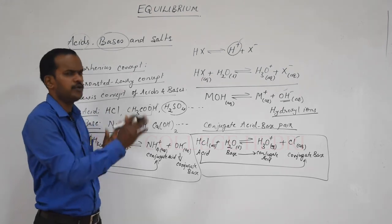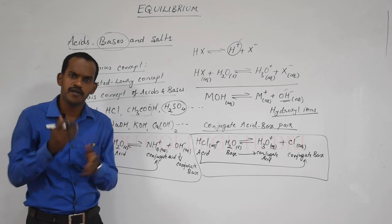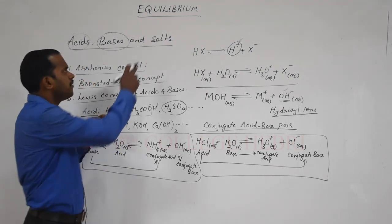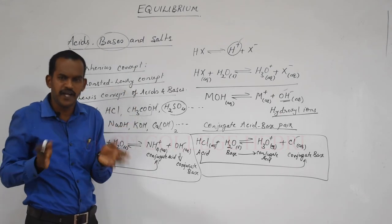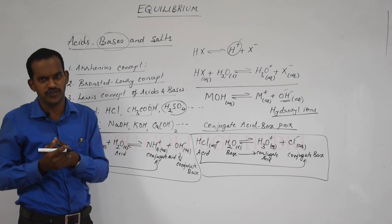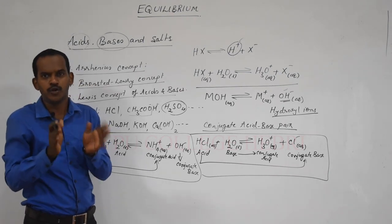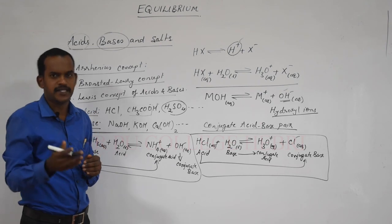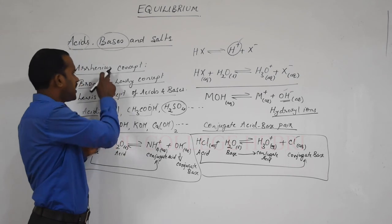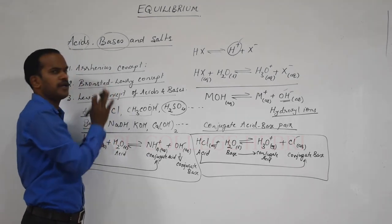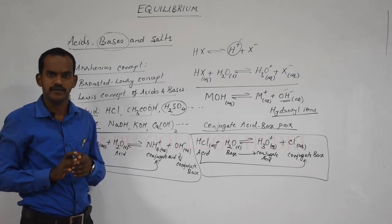Later on, you will study about the dissociation constants for acids and bases and the ionic product of water. We will also discuss salts — what are the different types of salts, how they undergo hydrolysis, and how hydrolysis is related to neutralization. Those details will come up in the next class. Today you understood the three concepts: Arrhenius concept, Bronsted-Lowry concept, and Lewis's concept of acids and bases. Thank you.